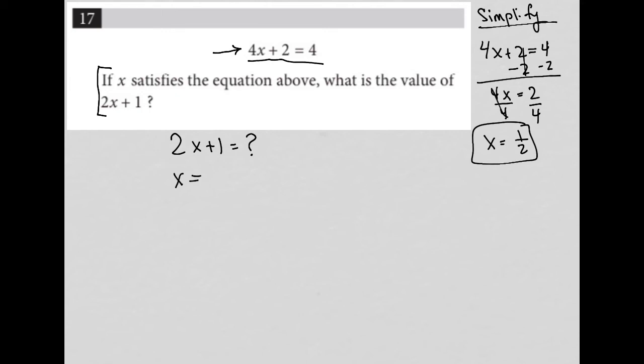But don't forget, we just solved for x. We know that x is 1 half. I'm going to just take this 1 half, plug it into this x here, and that's how I'll find my answer. So 2x plus 1 turns into 2 times 1 half plus 1.